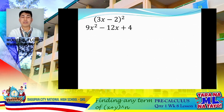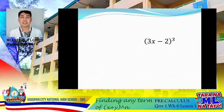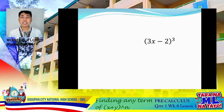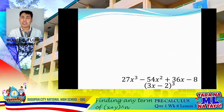So obviously our answer is 9x squared minus 12x plus 4. What if the given is (3x minus 2) raised to 3? Again, we could come up with different methods — it's either we're going to use the FOIL method with the two binomials and then multiply the remaining third binomial, distributing with our answer.